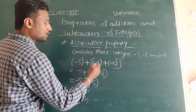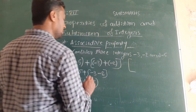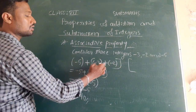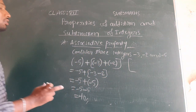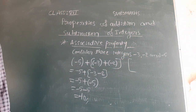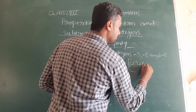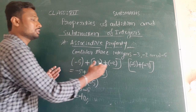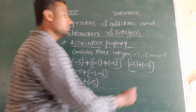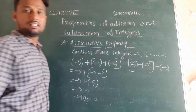Now let us check with [minus 5 minus 3] plus minus 2. Here I consider minus 5 and minus 3 inside one square box, and minus 2 outside. I have written first two terms inside the square bracket and minus 2 outside.